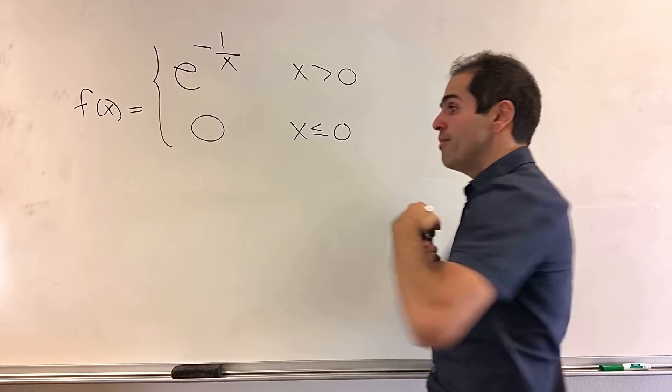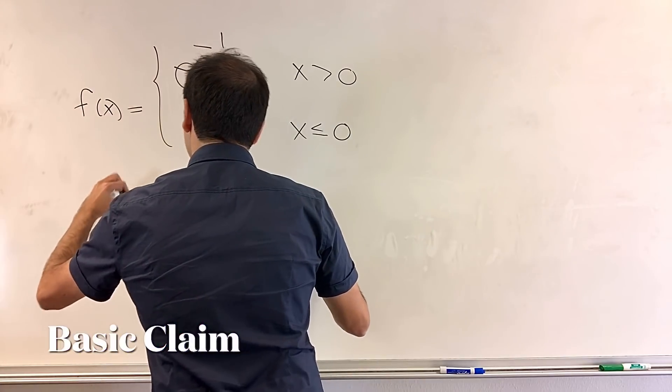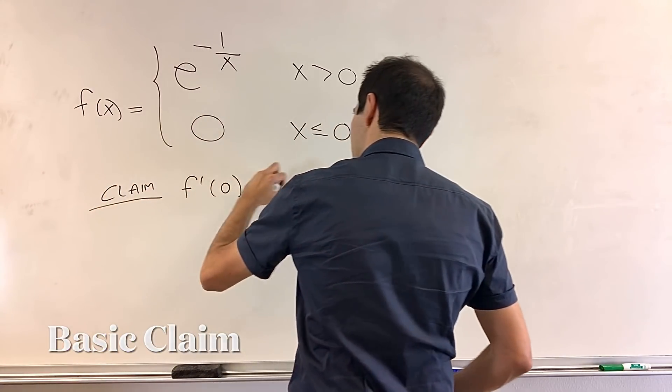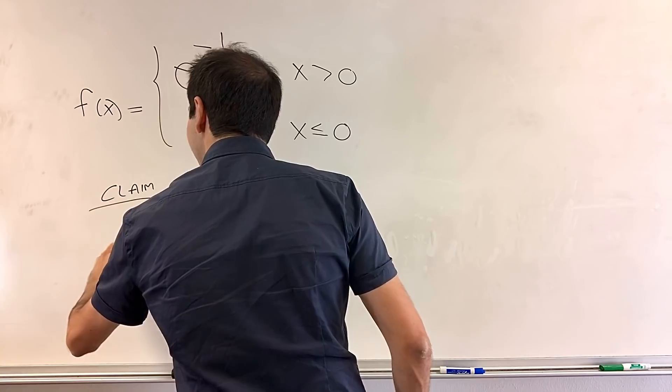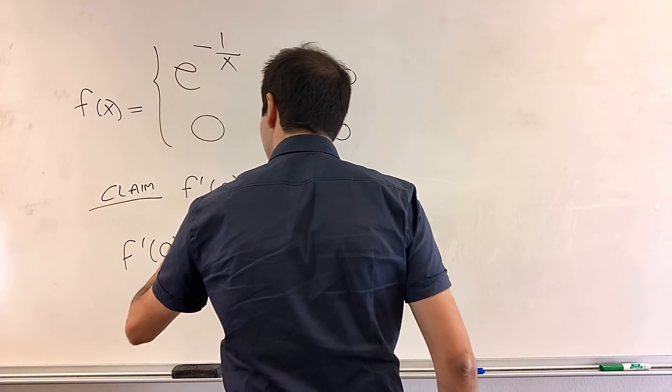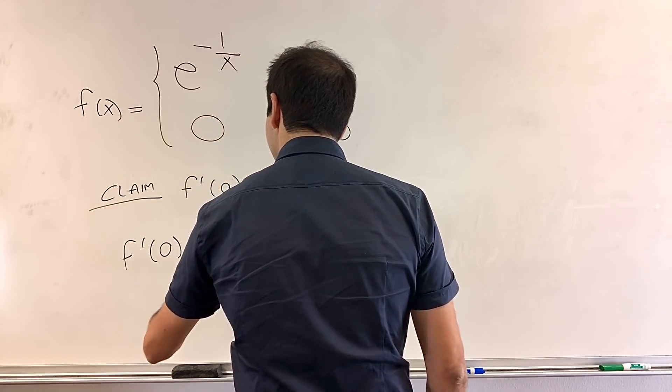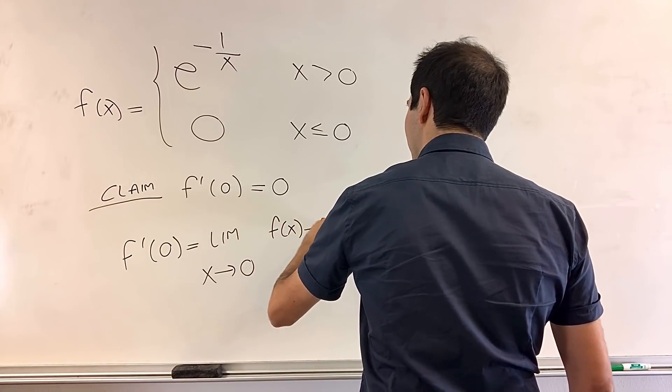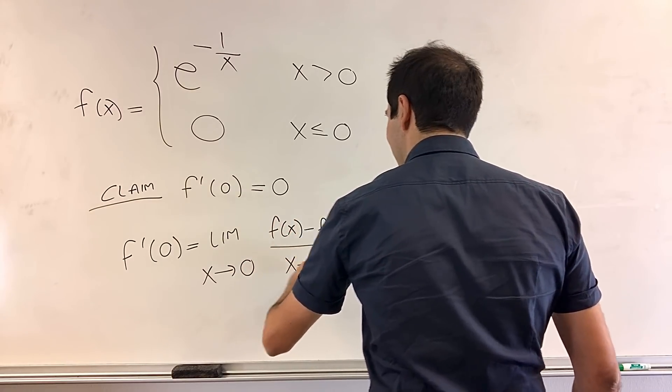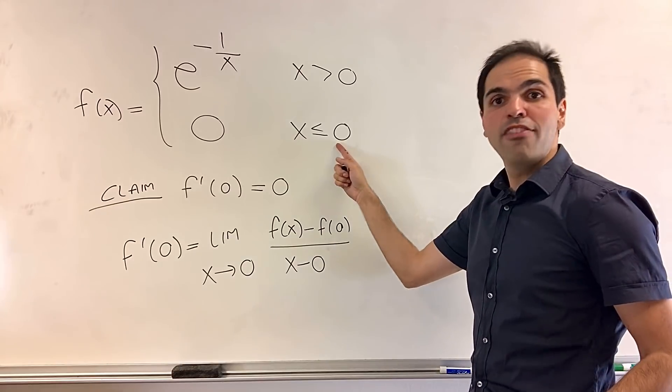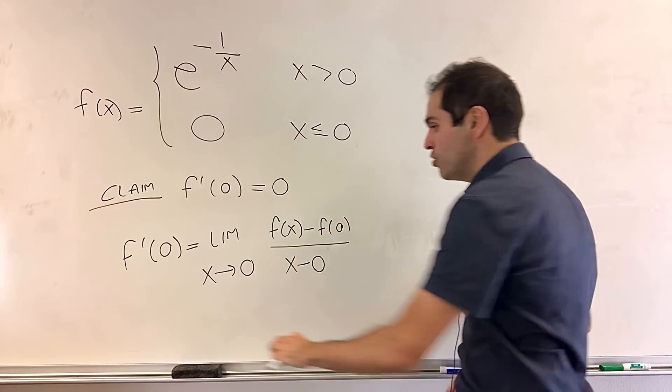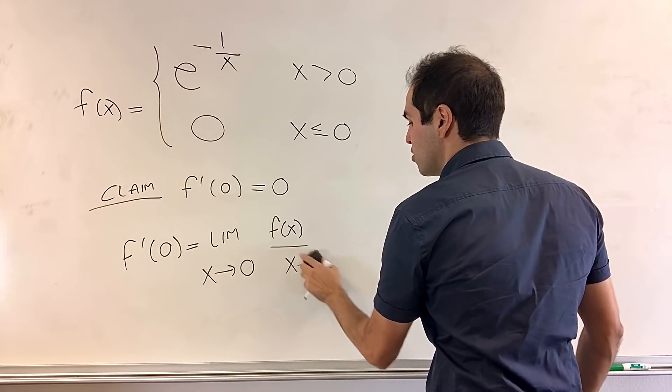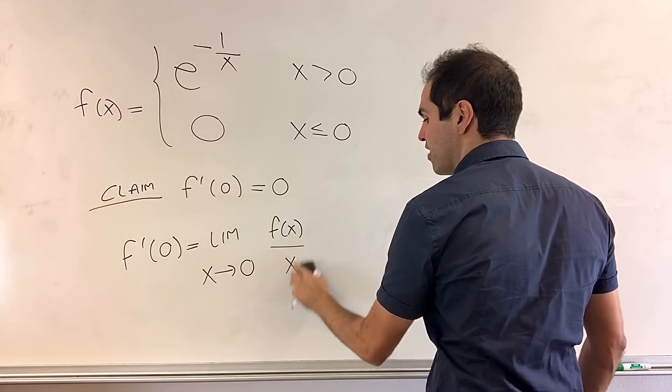Okay. So claim, let's first of all show that f prime of zero equals zero. Why? In that case, just use the limit definition of the derivative. So limit x goes to zero of f of x minus f of zero over x minus zero. But f by definition is defined to be zero at zero. So this is just limit x goes to zero of f of x over x.